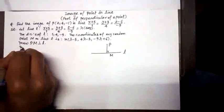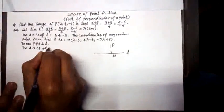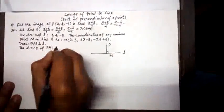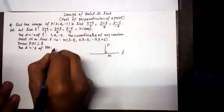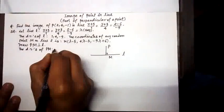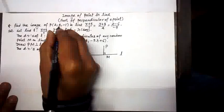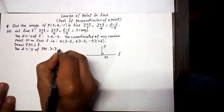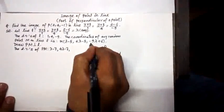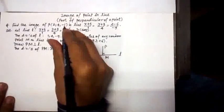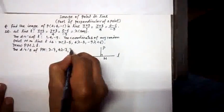Now we shall be finding the direction ratios, the DRs of line PM, which is (λ-5-2) that is (λ-7), (4λ-3-4) that will be (4λ-7), and further, (-9λ+6-(-1)) that will be plus 1, and eventually we get (7-9λ).